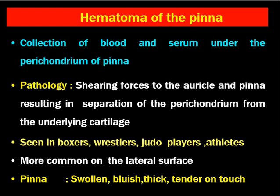Hematoma of the pinna is defined as collection of blood and serum under the perichondrium of the pinna. This usually happens due to shearing forces to the auricle and pinna, which results in separation of the perichondrium from the underlying cartilage. This is common in boxers, wrestlers, judo players, and athletes when there is trauma to the lateral part of the pinna. The lateral part of the pinna is more tight in comparison to the medial part, which is more relaxed. Therefore, when there is pressure or tear on the lateral aspect, there is a shearing force and formation of the hematoma.